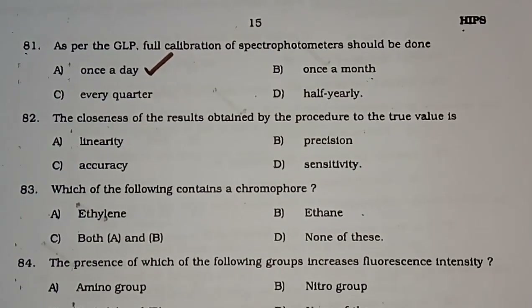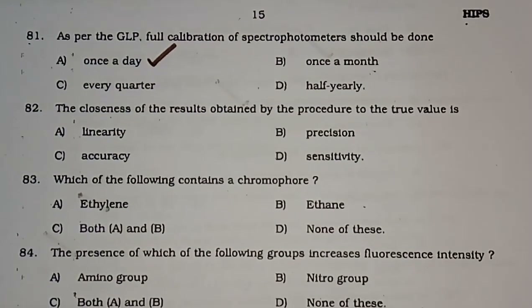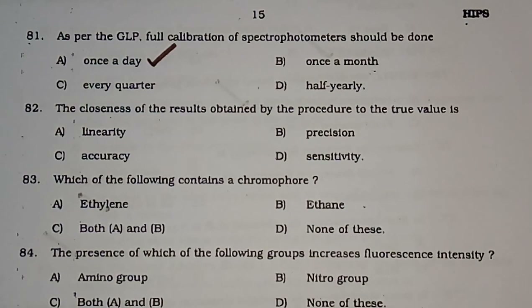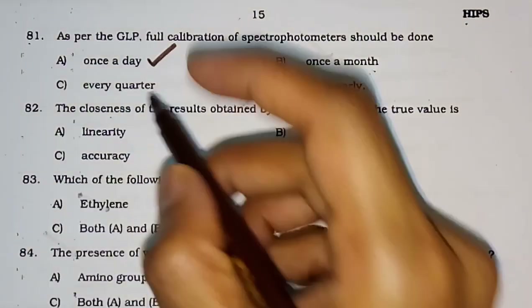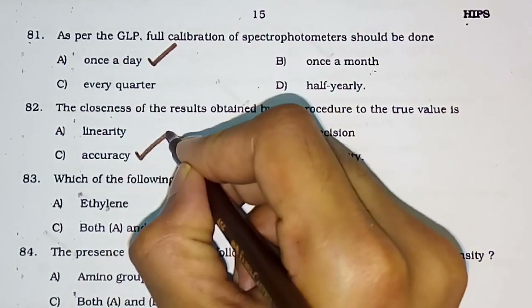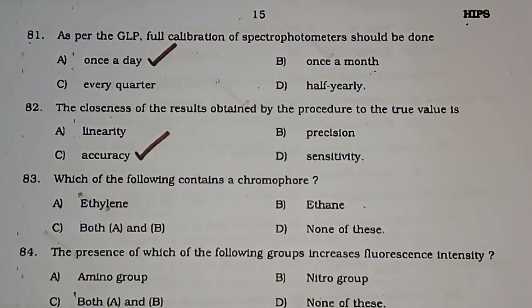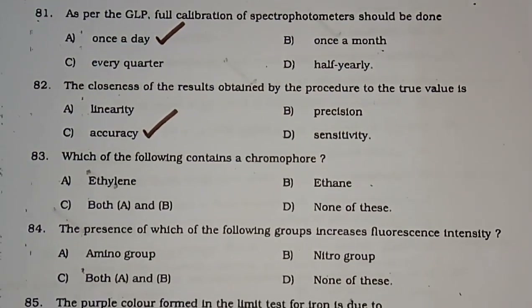Question number 82: The closeness of results obtained by a procedure to the true value is — linearity, precision, accuracy, or sensitivity. The correct answer is accuracy.